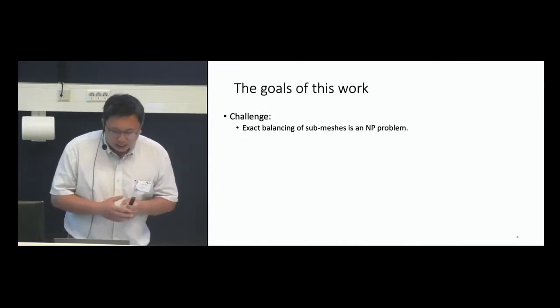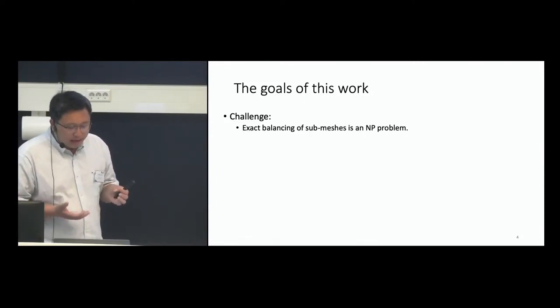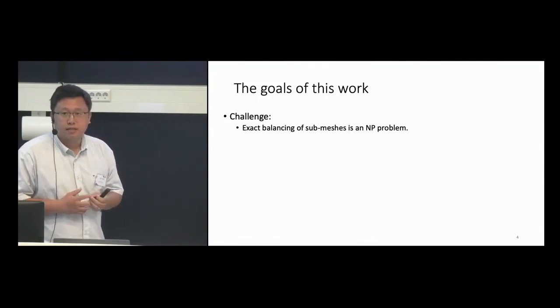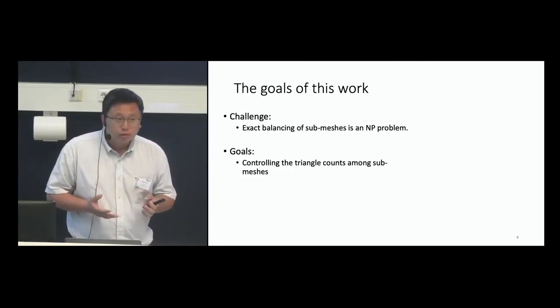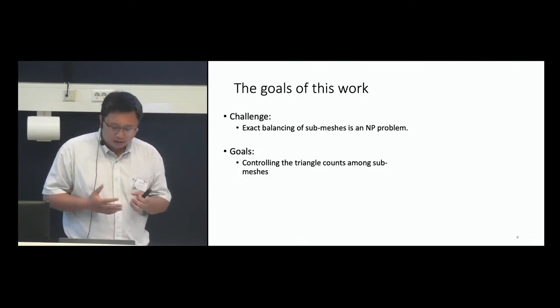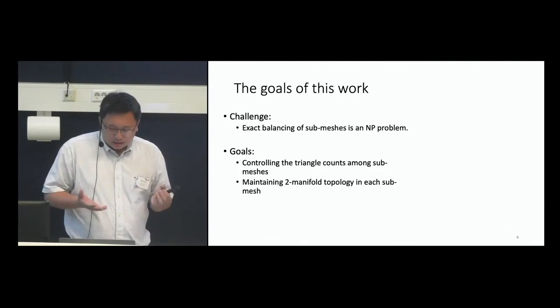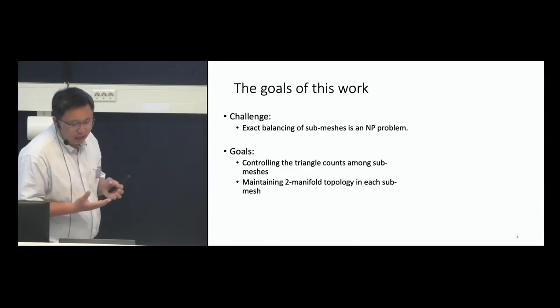The challenge here has been recognized in the literature: exactly balancing the submeshes is an NP problem, so doing this on the CPU will be time-consuming. We address this by proposing primary goals. The first goal is to come up with a strategy that precisely controls the triangle counts among the submeshes. The second goal is that after segmentation, we want to maintain manifold topology in each submesh.